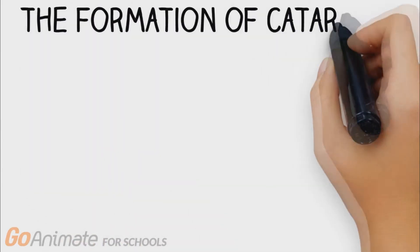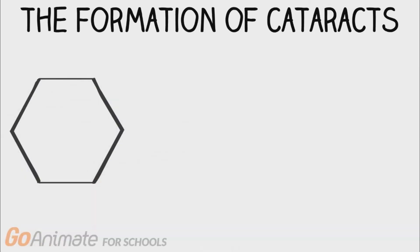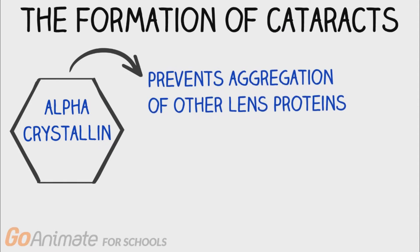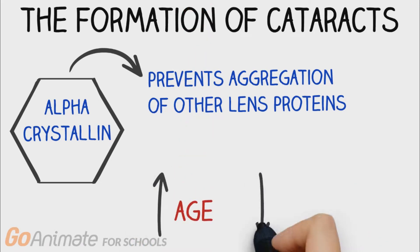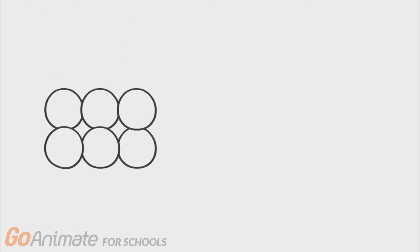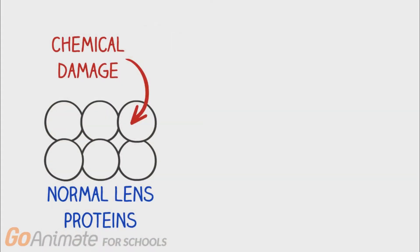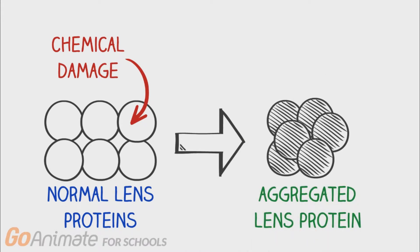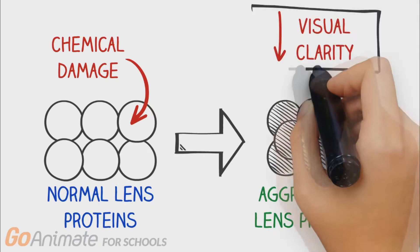Now let's look at the formation of cataracts. One major protein in the lens is alpha-crystallin, and it prevents the clumping together, or aggregation, of other lens proteins. Unfortunately, with increasing age, we get a decrease in the amount of alpha-crystallin. This is not good because it means when chemical damage is done to the lens proteins, they are more susceptible to aggregation. These aggregated lens proteins affect the ability of the eye to let light pass through normally, which reduces visual clarity.